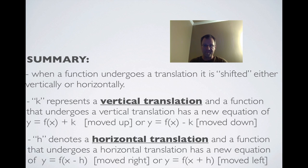Okay, in summary, we say that a function undergoes a translation if it's shifted either vertically or horizontally. That just means it moves either left or right or up or down. We use the letter K to represent a vertical translation. And the function that undergoes a vertical translation has a new equation of y equals f of x plus k if it's moved up or y equals f of x minus k if it's moved down.